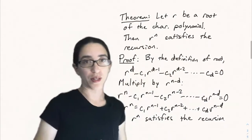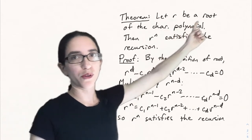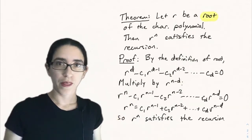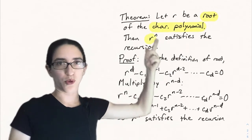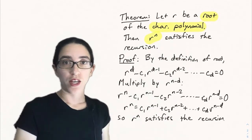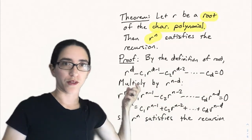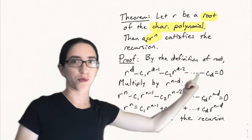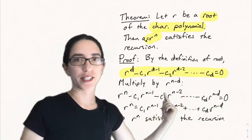If r is a root of the characteristic polynomial — meaning you plug r in and get 0 — then the sequence r^n satisfies the recursion. We can understand this by plugging r into the characteristic polynomial, replacing x with r. If we multiply both sides by r^{n-d}, that raises each exponent so we start with r^n minus c1·r^{n-1} minus c2·r^{n-2} down to c_d·r^{n-d}.